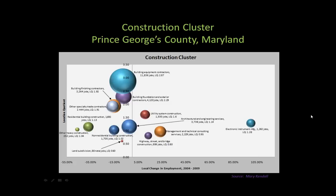Here's an example: the construction cluster in Prince George's County, Maryland, done by one of my grad students. You can see there's a large cluster of construction firms and related businesses in Prince George's County. The large blue circle at the top — building equipment contractors — employs almost 12,000 people with a location quotient of 2.87, meaning that industry is almost three times as dense in Prince George's County as in the average county throughout America.